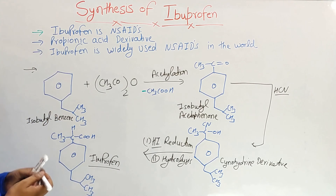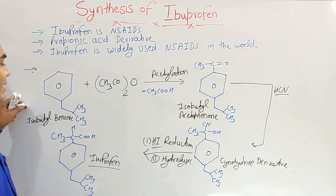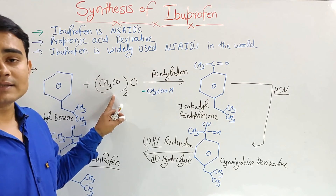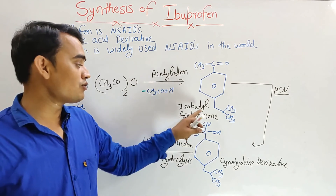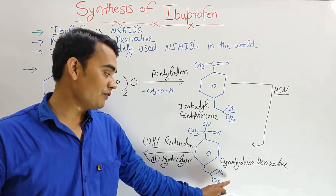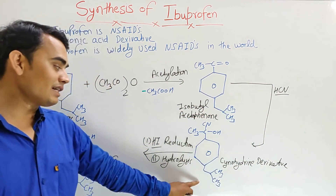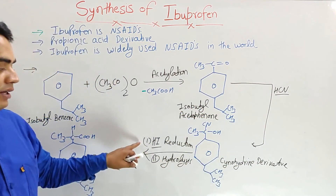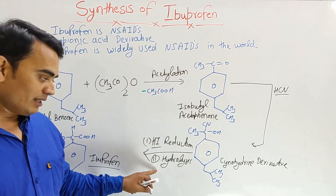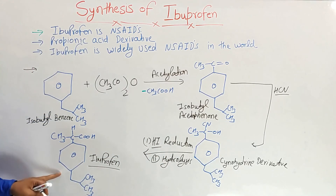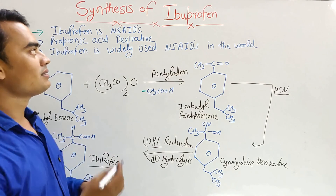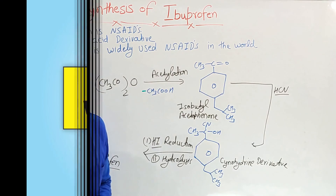To summarize: isobutylbenzene reacts via acetylation to form isobutyl acetophenone; reaction with HCN forms the cyanohydrin derivative; this undergoes HI reduction followed by hydrolysis to form ibuprofen. This is the synthesis of ibuprofen. Thank you.